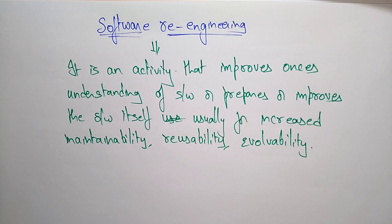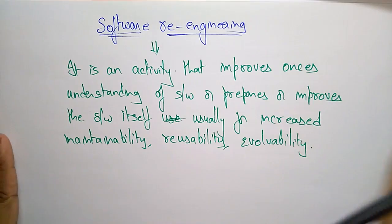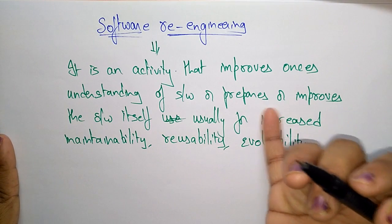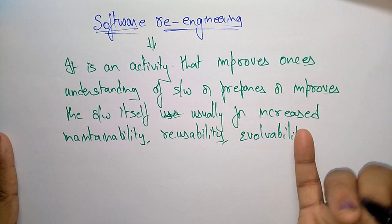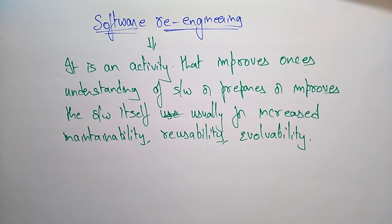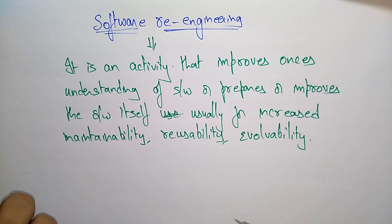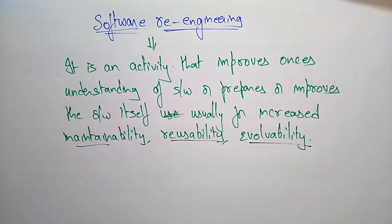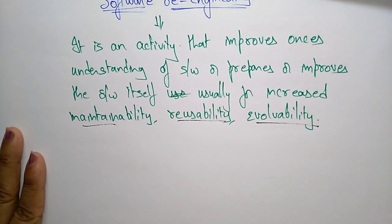So, software re-engineering is an activity that improves one's understanding of software. Mainly, the use of re-engineering is to understand the software, or to prepare the software, or to improve the software itself. We are using the software re-engineering process usually for increasing maintainability, reusability, and availability.